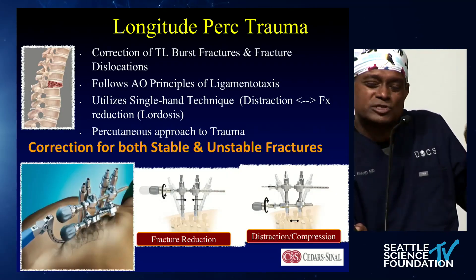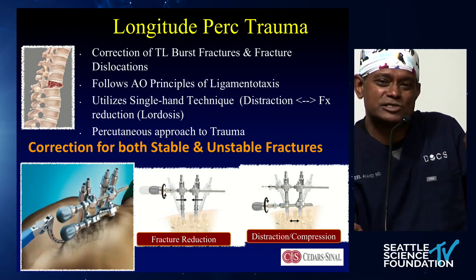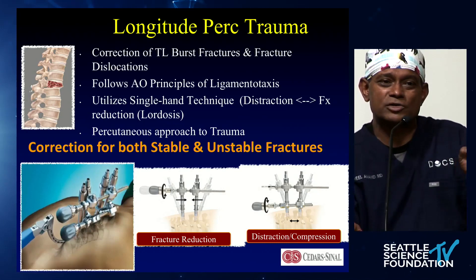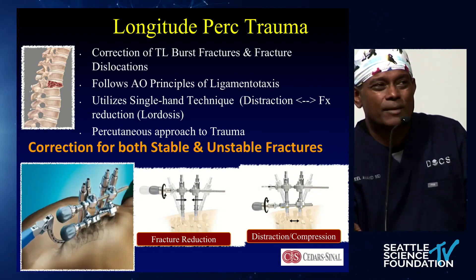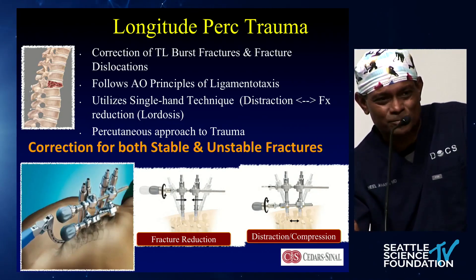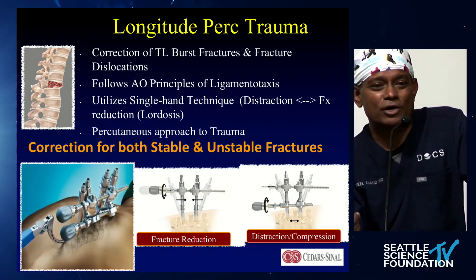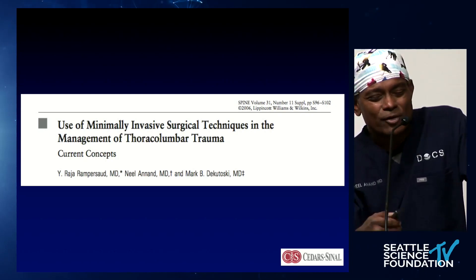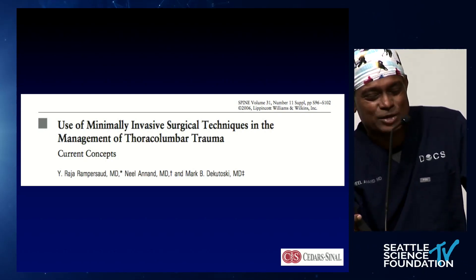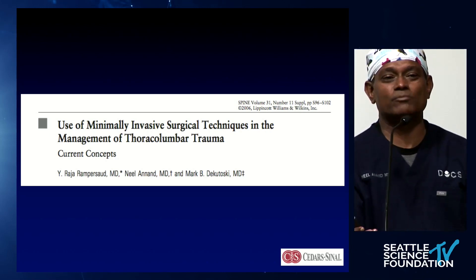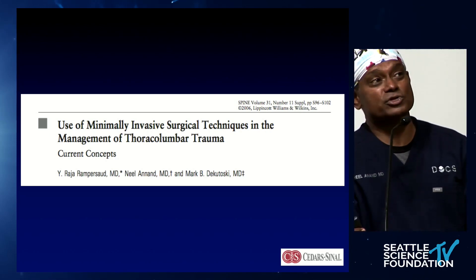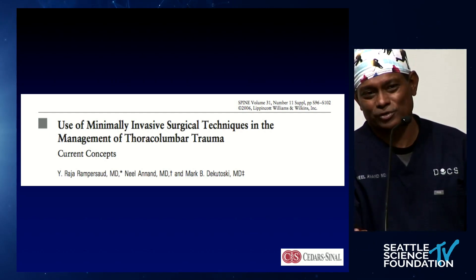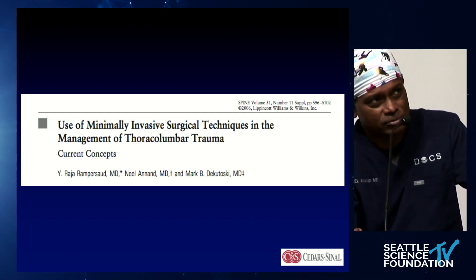You can address both stable and unstable fractures by understanding the mechanics of reduction percutaneously — using levers to compress or distract to get what you need. But honestly, the key is positioning, rod bending, and creating the reduction you need through the towers. Most of it occurs there. We published these concepts way back in 2006, and a lot of them have come to fruition. I'll be honest — we were basically thinking out of our hats at that point, but I think a lot has materialized since.